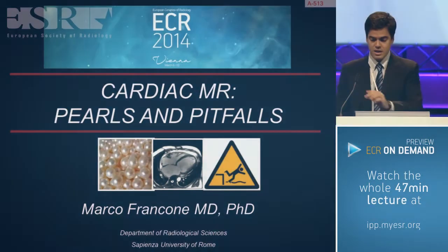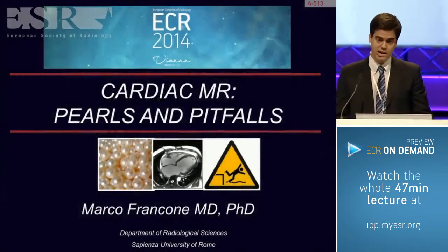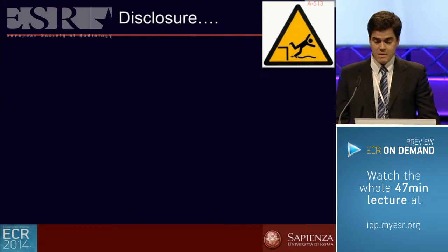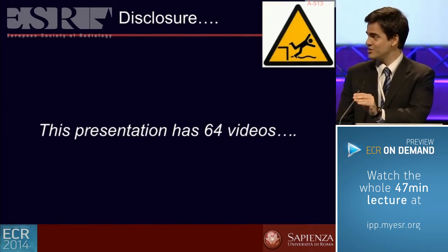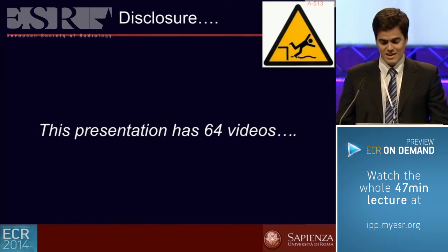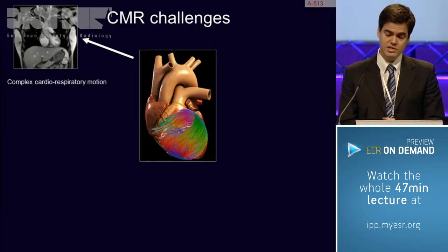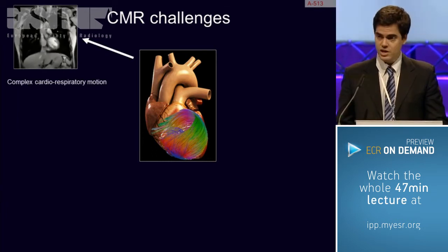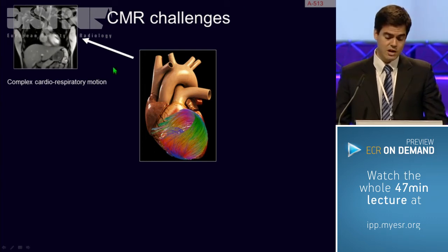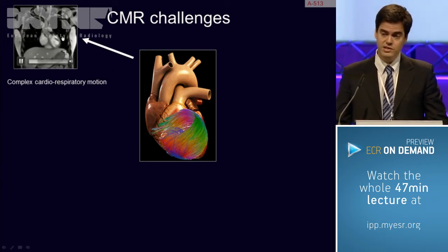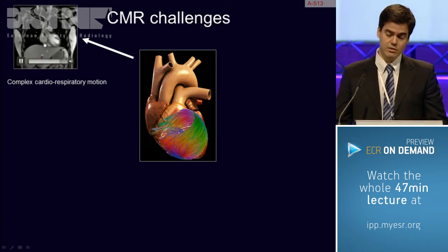Now it's the MR turn, and we are talking about a complex technique with partial overlapping, mostly related to the anatomical pitfalls we already heard about. This presentation has 64 videos, which is already a pitfall we will hopefully manage to skip. Cardiac MR faces several important challenges that radiologists or cardiac imagers need to be aware of. The first issue is related to the complex cardiorespiratory motion shown in this real-time movie, which implies a continuous upward and rightward motion of the diaphragm, and of course the heart.